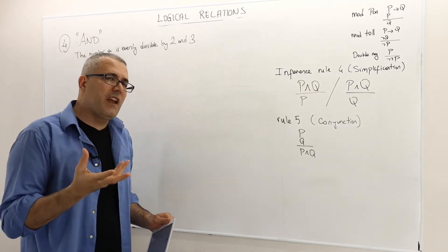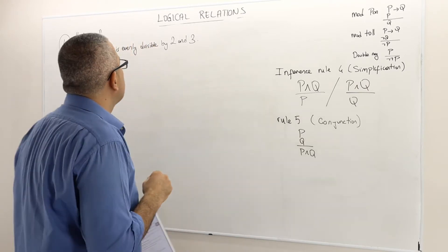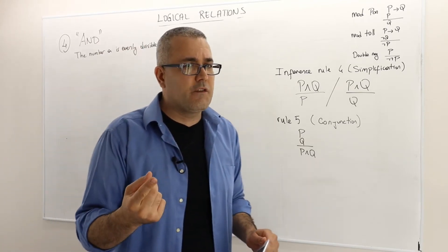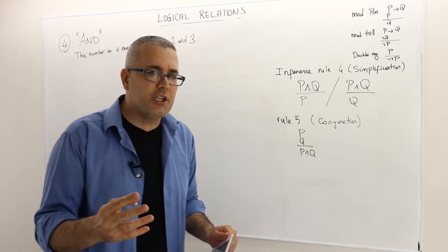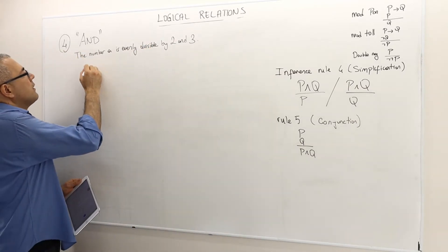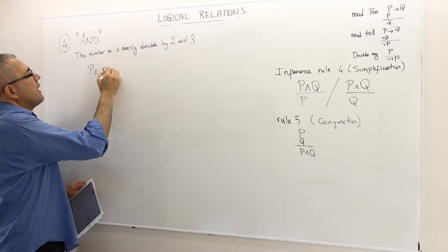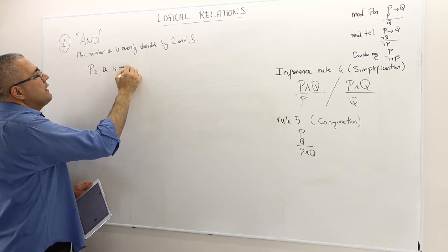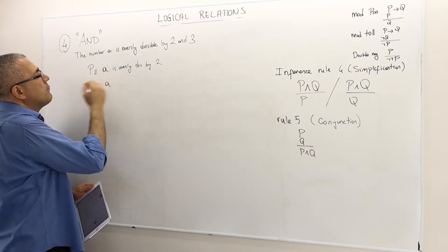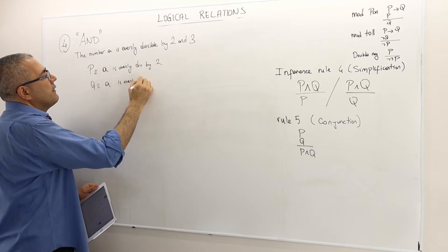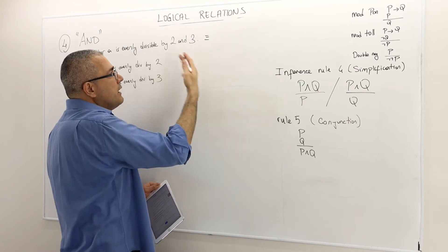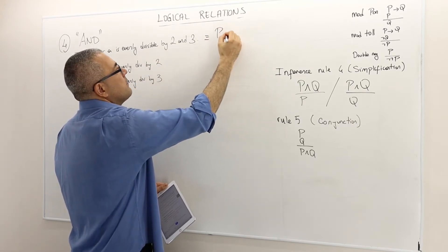This is not an atomic sentence. However, it's not a conditional sentence or negation of any atomic sentence either. It's a conjunction of two atomic sentences where P, for example, is 'the number A is evenly divisible by 2' and Q is 'the number A is evenly divisible by 3.' Therefore, this statement is equal to the statement P and Q.